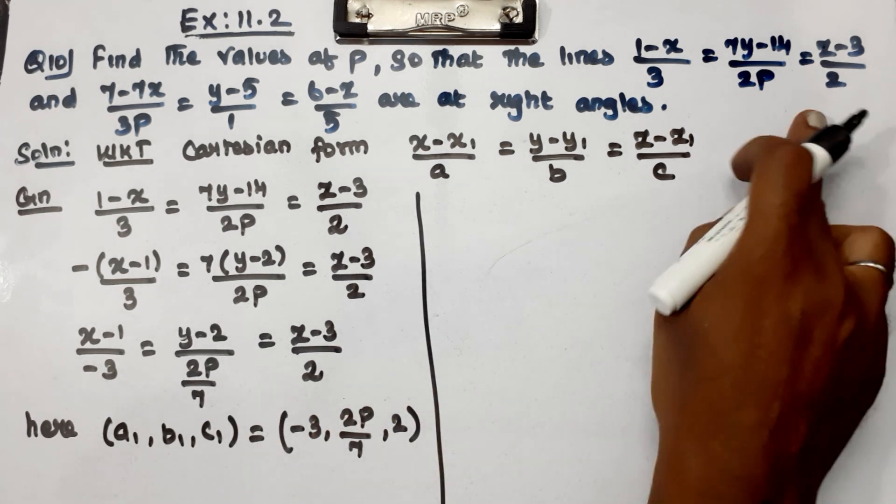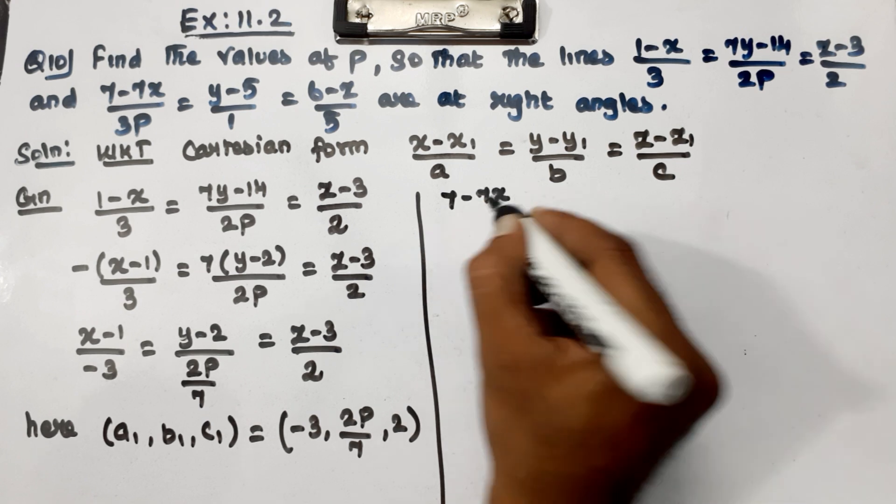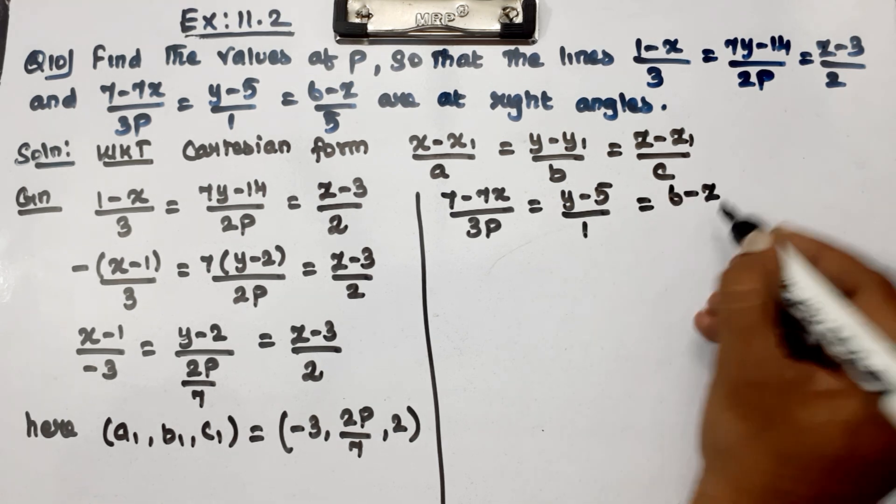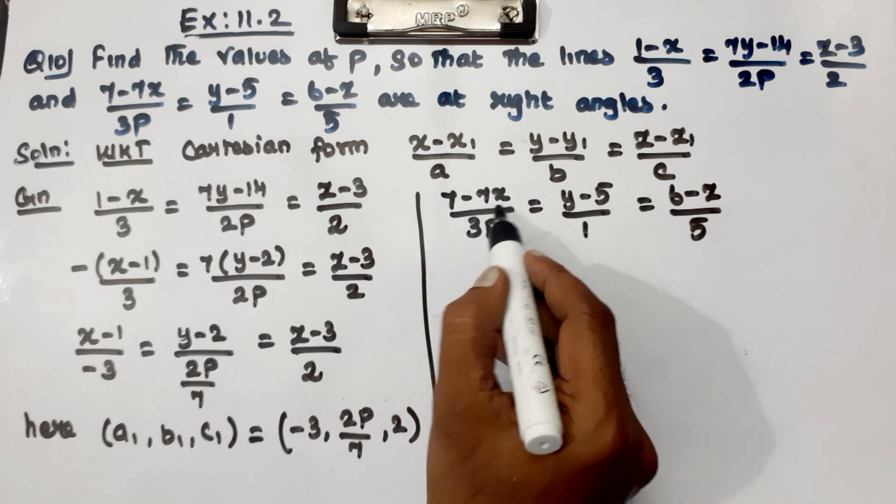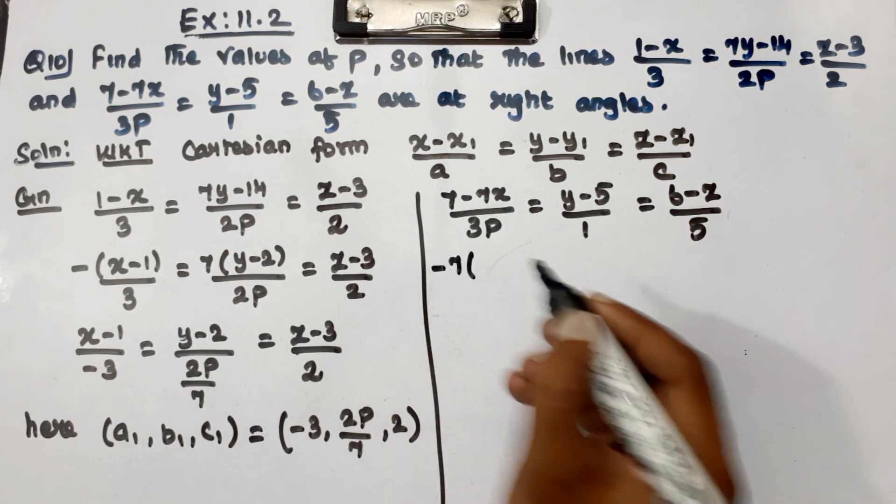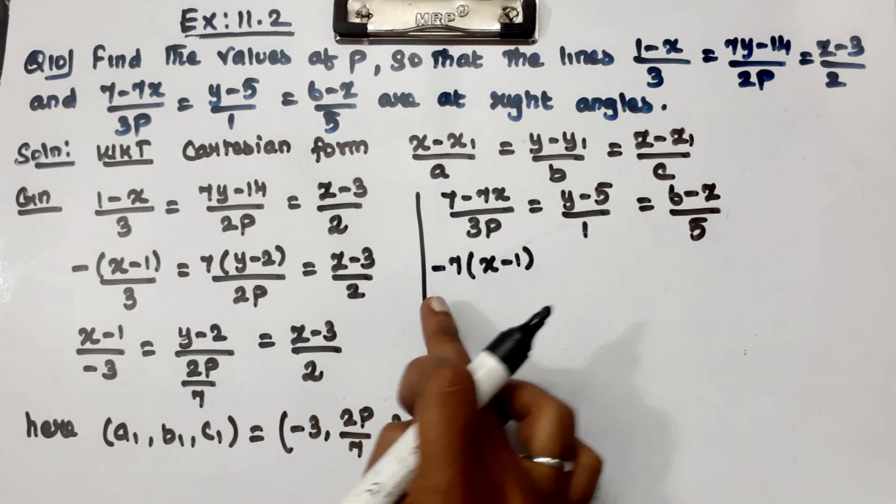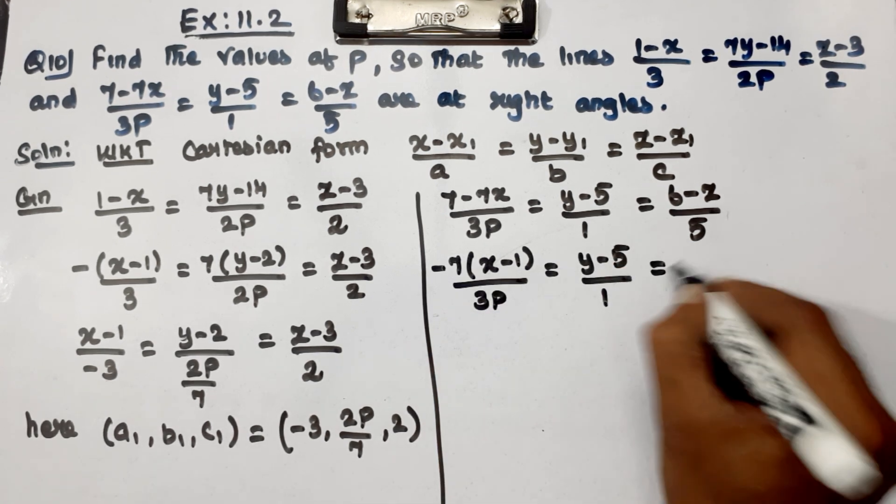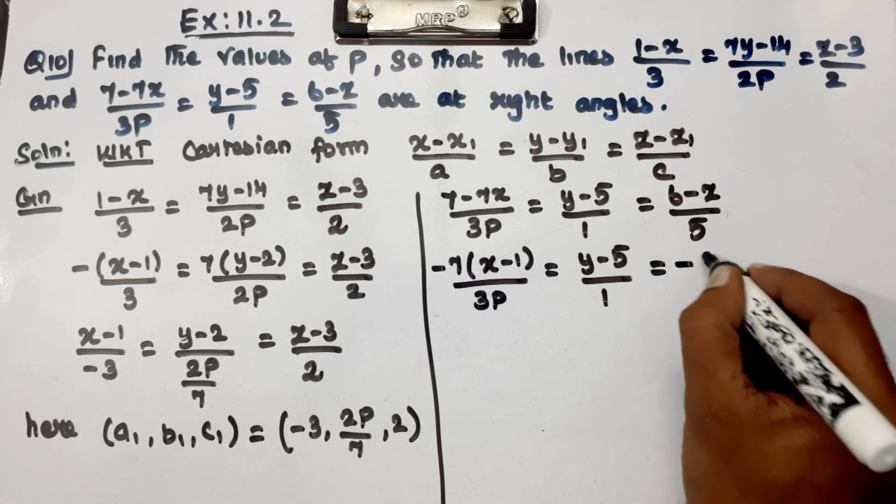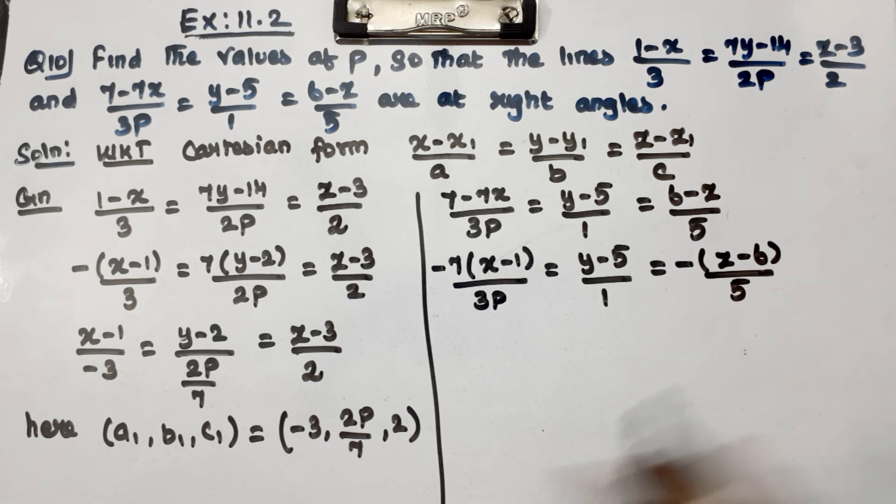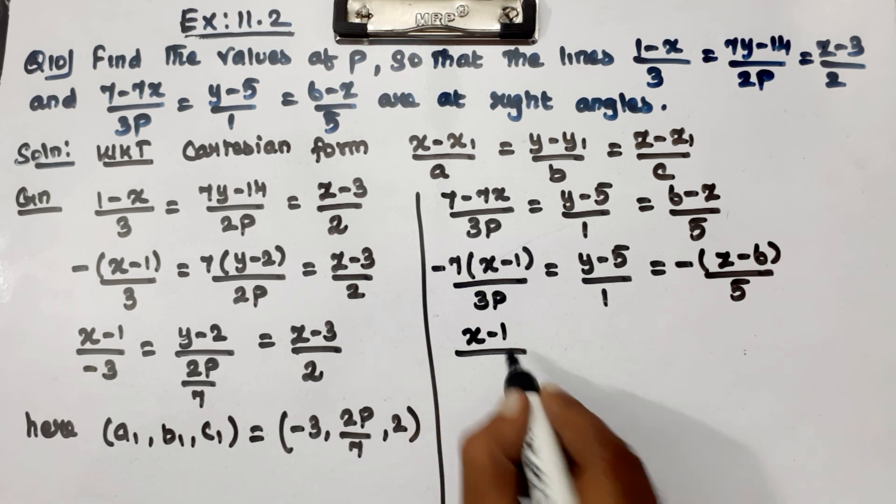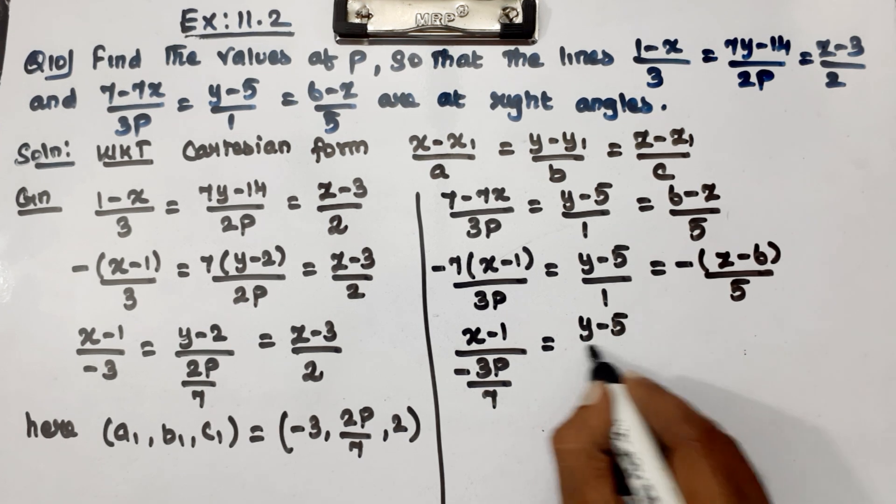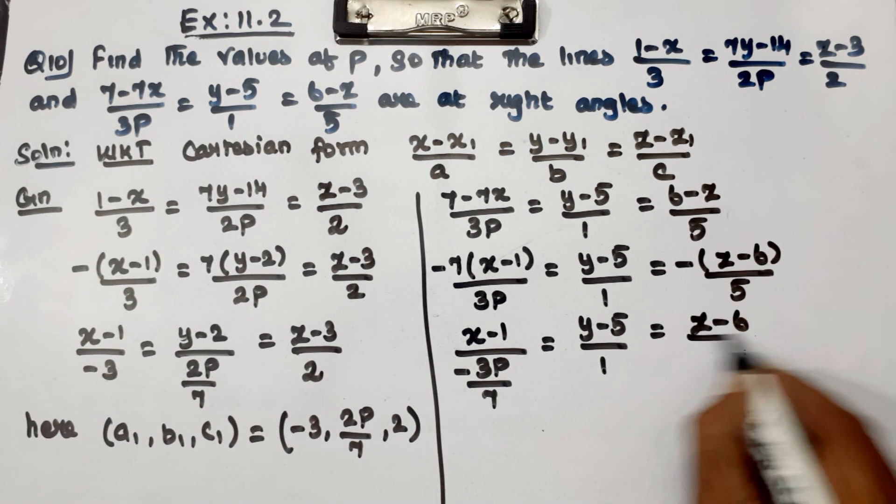Second equation. 7 minus 7x divided by 3p equal to y minus 5 by 1 equal to 6 minus z by 5. Converting, x minus 1 divided by minus 3p equal to y minus 5 by 1.